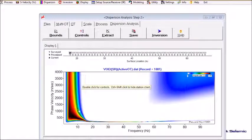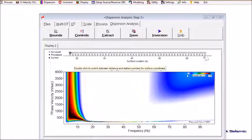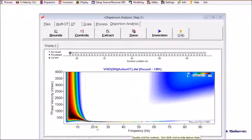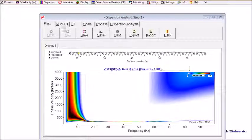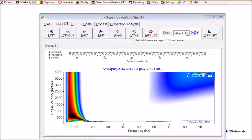And now I have all 50 dispersion images here. So, rather than going through each individual dispersion image and extract one dispersion curve from each image, I'm going to stack all these 50 dispersion images together and then extract one dispersion curve from that stacked image. And for that, I select Multi-OT tab here and then click Stack.